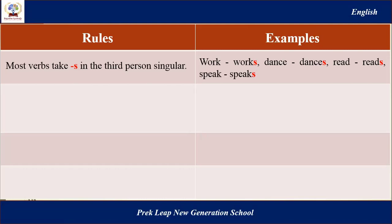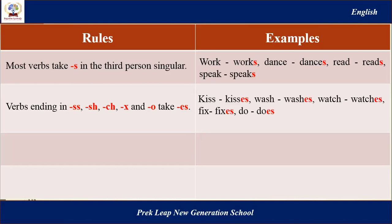Rule number two: verbs ending in -SS, -SH, -CH, -X, and -O — we add -ES at the end of the verb. For example: kiss becomes kisses, wash becomes washes, watch becomes watches, fix becomes fixes, do becomes does. For example: She does her homework every night.